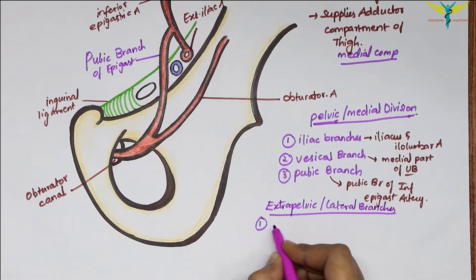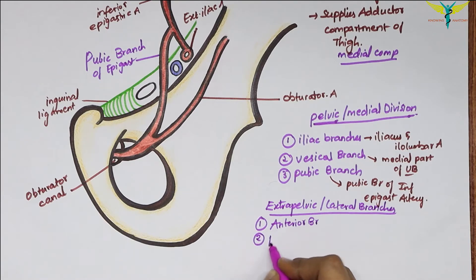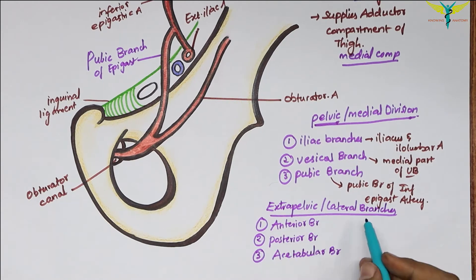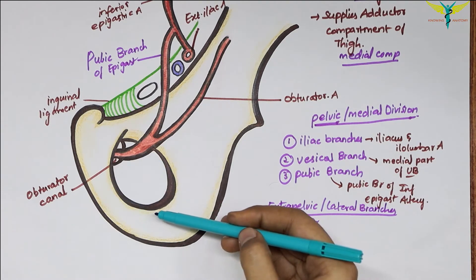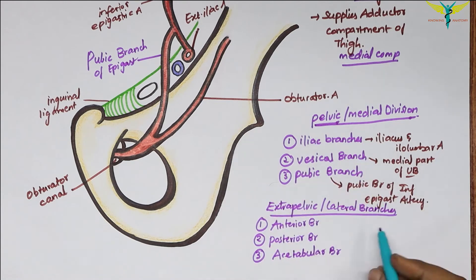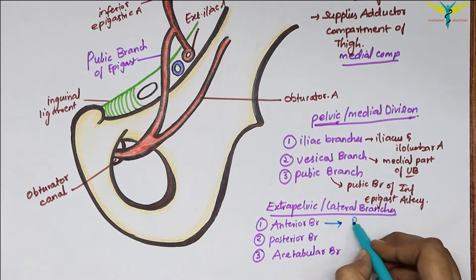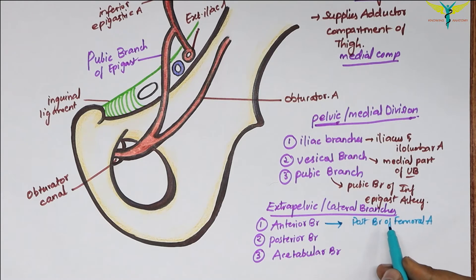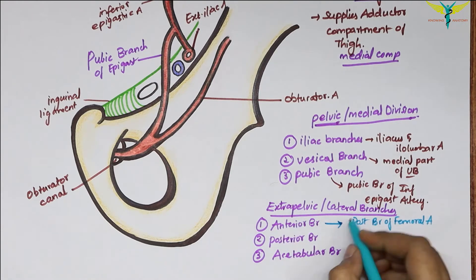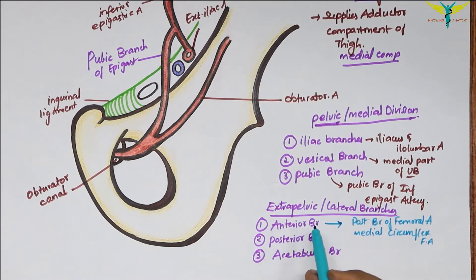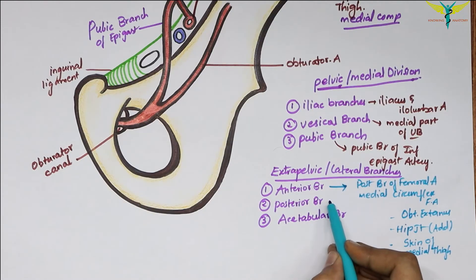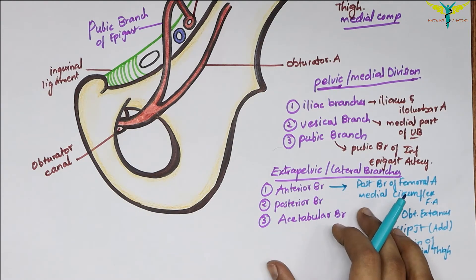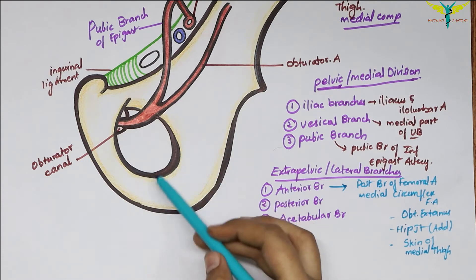The extra-pelvic or lateral branches include the anterior branch, the posterior branch, and the acetabular branch. The anterior branch follows the inner part of the pubic ramus and anastomoses with the posterior branch of the femoral artery and the medial circumflex femoral artery. It supplies the obturator externus muscle, the adductors of the hip joint, and the skin over the medial thigh.